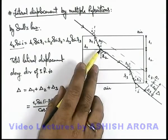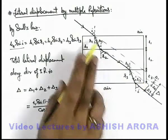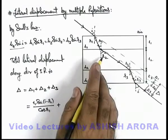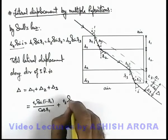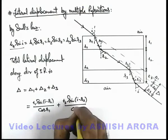This is the displacement when the final ray is considered to be coming out in the direction of angle of incidence i. Plus, in the same direction, the displacement Δ2 due to the second slab we can write as t2 sin(i - r2) divided by cos r2.